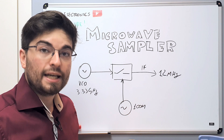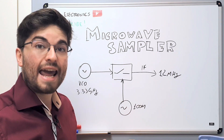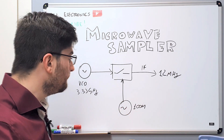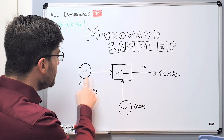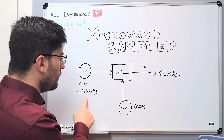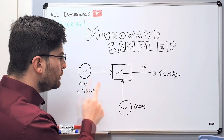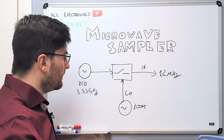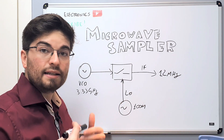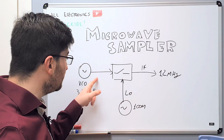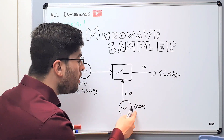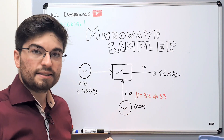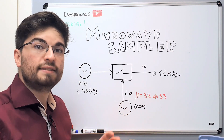In the time domain it uses aliasing to down-convert a microwave signal using a much lower LO, because it's actually down-converting the signal using a harmonic of the LO. Let's understand how it works in the time domain.